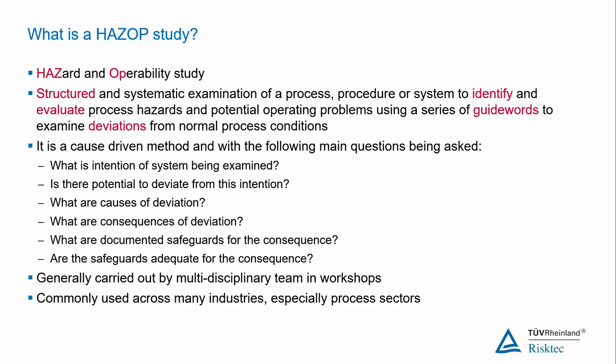HAZOP stands for Hazard and Operability — don't forget the operability side. It is structured and systematic, and can cover processes and procedures to identify and evaluate hazards and operability problems using a series of guide words to identify deviations from normal process conditions. It is a cause-driven method. The main questions asked are: what is the intent of the system? Is there a potential to deviate? What are the causes and consequences of deviation? What are our documented safeguards, and are those safeguards adequate for the consequence identified? It's carried out by a multi-disciplinary team and can be effectively used for any process that has a P&ID.